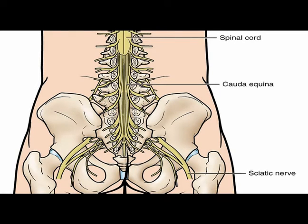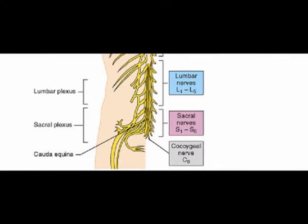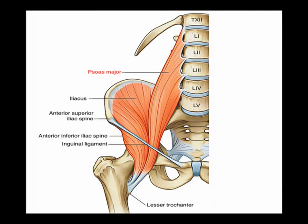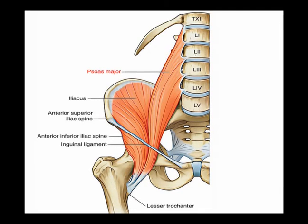They provide motor innervation to the hips, knees, ankles, and feet. The nerve roots descend vertically before exiting between the vertebrae through the neural foramina, traveling below the corresponding pedicle. For example, spinal nerve root L1 exits below the L1 pedicle, and the L5 nerve root exits below the L5 pedicle. A myotome is a muscle or muscle group that a single spinal nerve root innervates when we speak about the motor nerves.